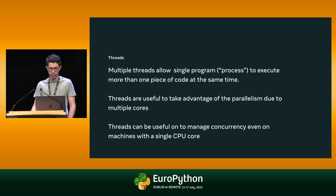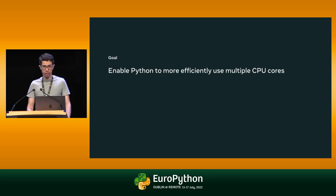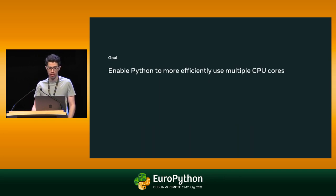The second reason is that threads can be useful for structuring concurrency, even on a single processor system. Threads might be used to handle multiple requests in a network server, to overlap I/O with computation, or to perform long-running tasks in a graphical application while keeping the user interface responsive. Threads aren't the only way to structure concurrency. Modern Python includes the async I/O package to structure concurrent asynchronous code. But this project is mostly focused on making multithreaded code run more efficiently on multicore computers.